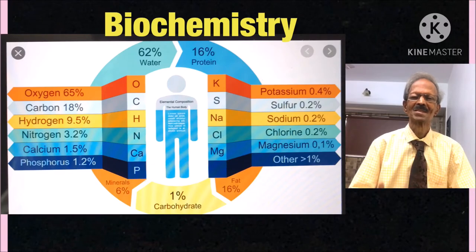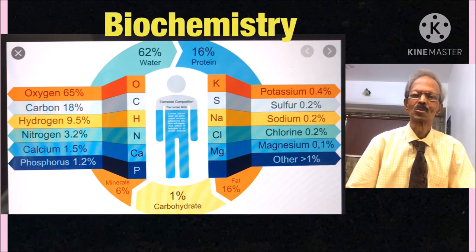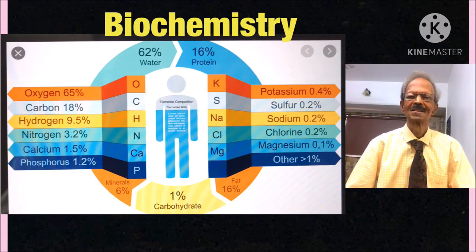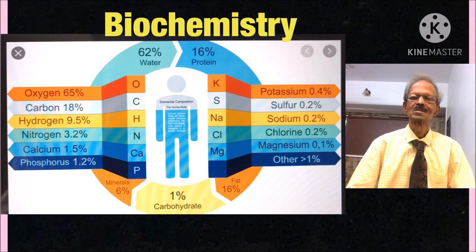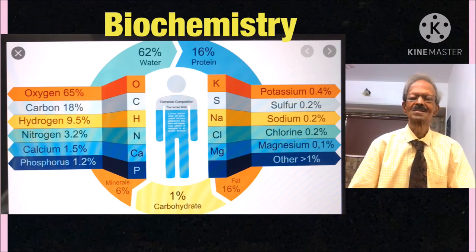It also includes unicellular organisms like bacteria and amoeba. The study of chemistry of these living forms means study of the composition of individual bodies, mainly in the form of carbohydrates, proteins, non-protein organic substances, lipids, minerals and water, etc.